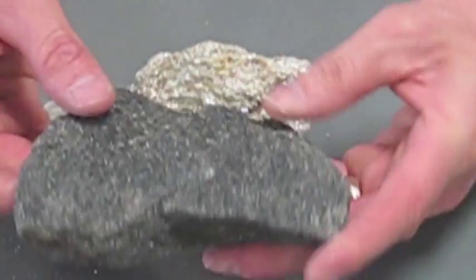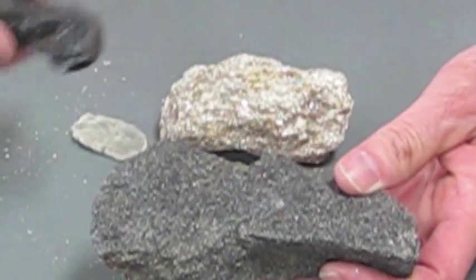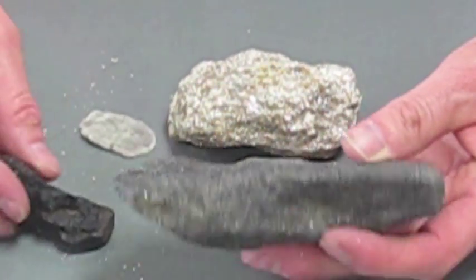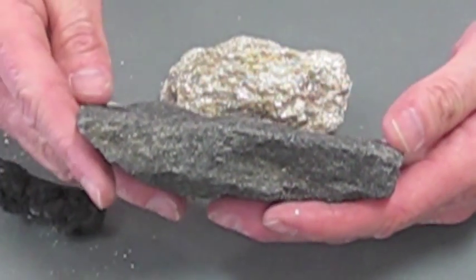This is an amphibole schist, started with a more mafic parent rock, and it has lots of amphibole crystals in it. And they're all aligned parallel to each other to define the foliation.